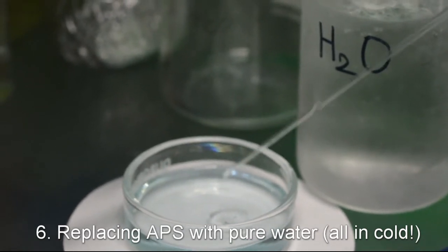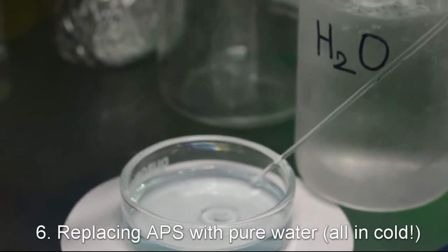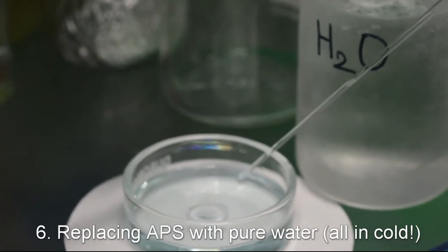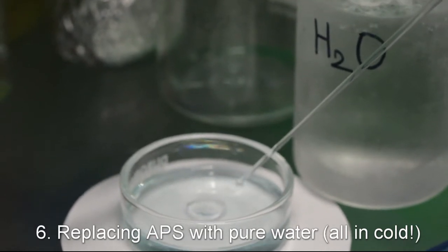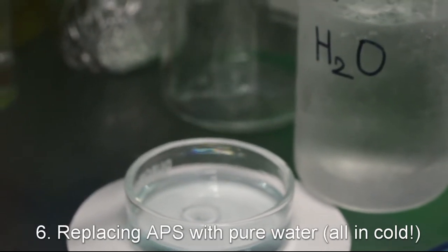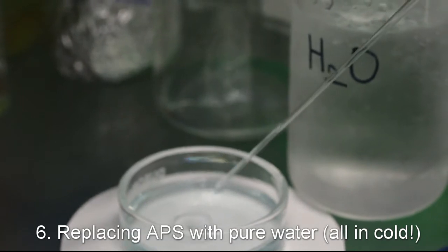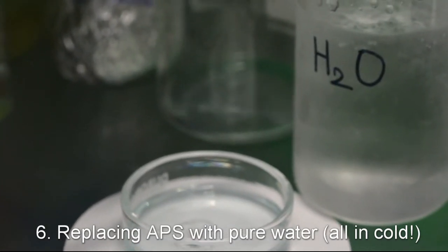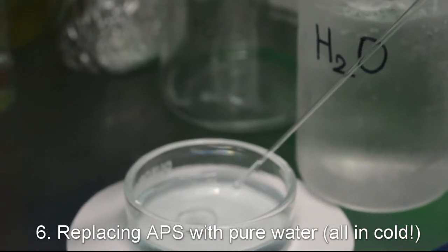Having very cold water is critically important here, otherwise cyclohexane will melt. We do it in the simplest possible manner, manually, slowly removing the APS solution and adding pure water. You can do it in a smarter way with a pump, for example, as long as you make sure that everything stays cold.